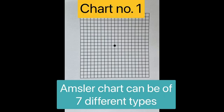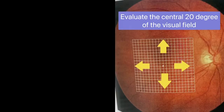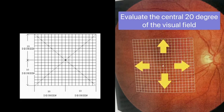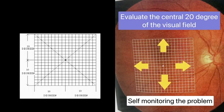The chart on the screen is chart number one, which can be black squares on a white background or white squares on a black background. This test is quite handy and evaluates the central 20 degrees of the visual field. If you are at risk of macular degeneration or any other disease related to the macula or the optic nerve, you can use this chart or advise your patient to monitor the progress of their vision and visual field.